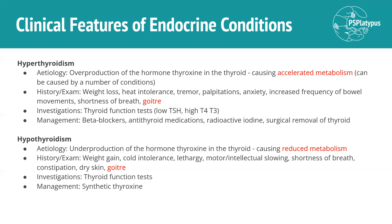In terms of investigations, you'd want to do thyroid function tests, and you would find low TSH and high T4 and T3 — you might remember that from the feedback loops diagram from your lectures. It's managed through beta blockers, antithyroid medications, radioactive iodine, and as a last resort, surgical removal of the thyroid, which can then result in permanent hypothyroidism. Hypothyroidism is the underproduction of that hormone, and all the symptoms are the result of reduced metabolism: weight gain, cold intolerance.